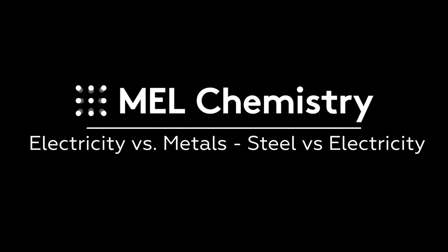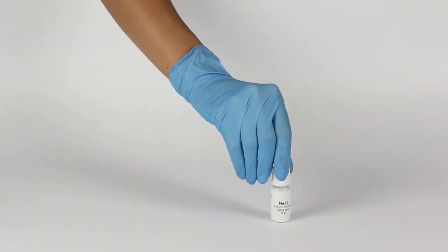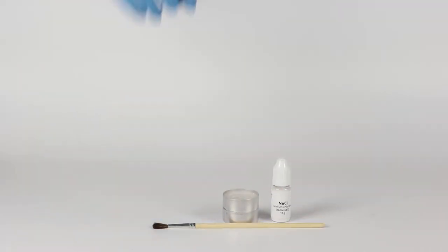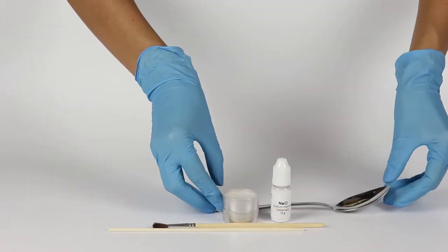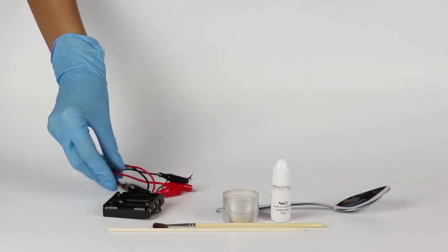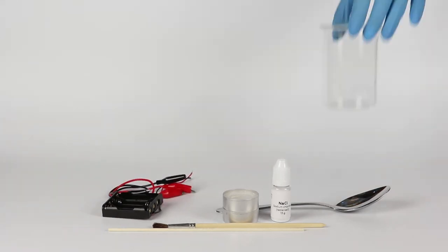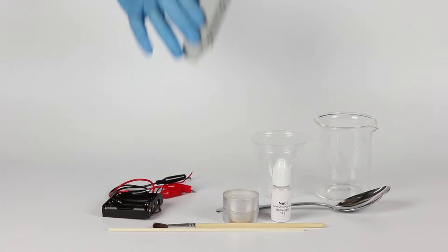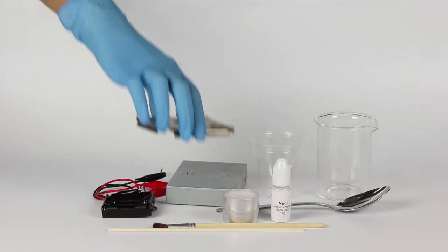For the steel versus electricity experiment, you will need sodium chloride, two candles, a brush, a wooden stick, a spoon, a battery holder, and crocodile clip wires. Take the beaker, a disposable cup, the stove, and the flame diffuser from the starter kit.